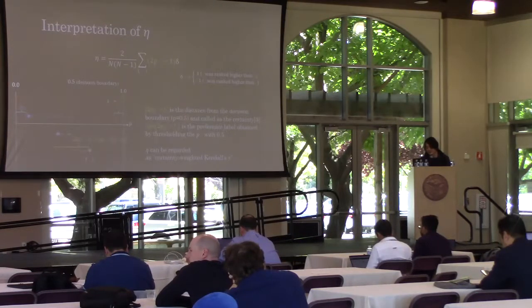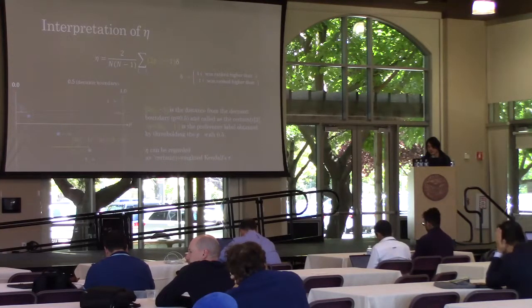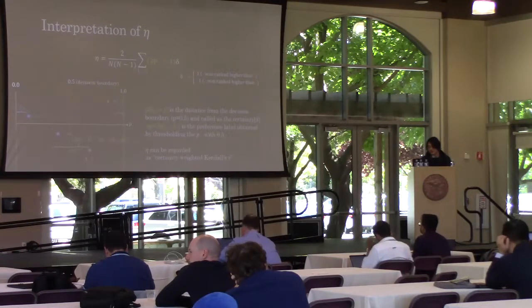The absolute value of this term is proportional to the distance from the discordant boundary. This is the distance between the values of pij and pji. When the two values are close, in other words, when the preference is uncertain, the value is small.